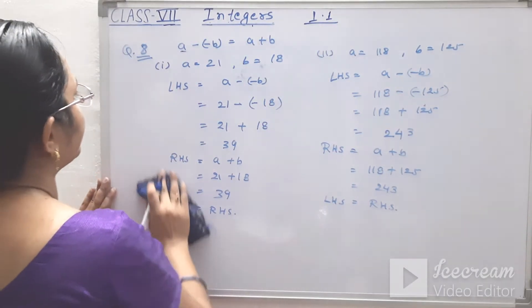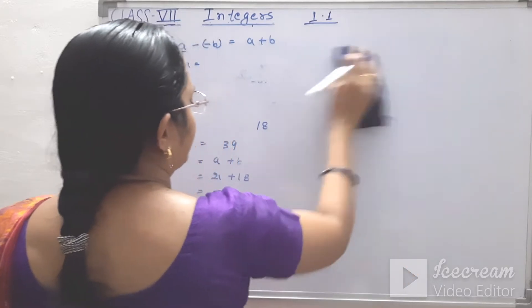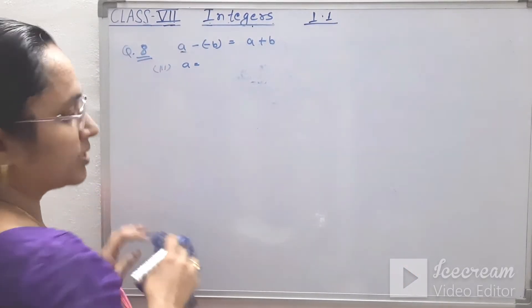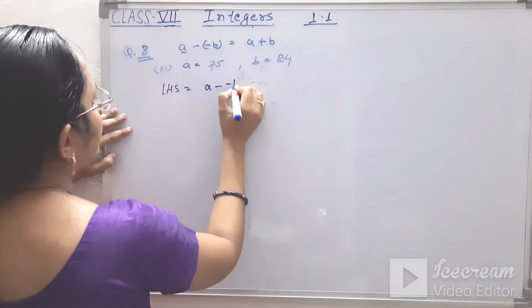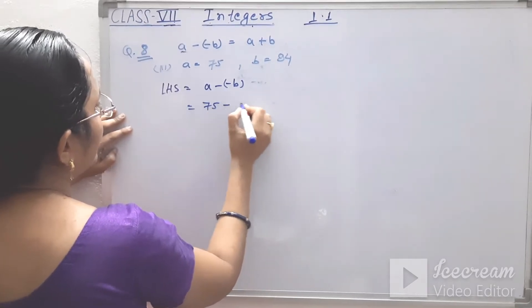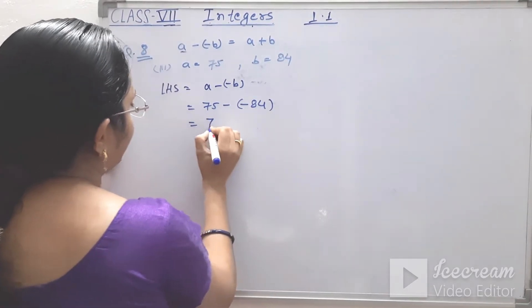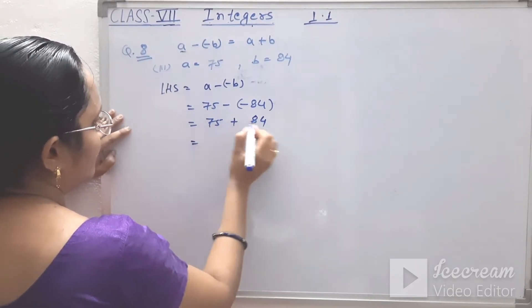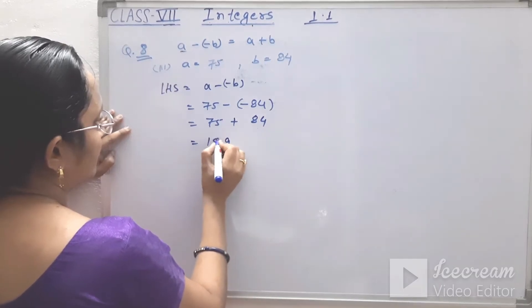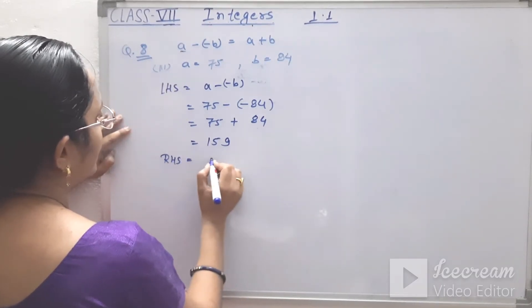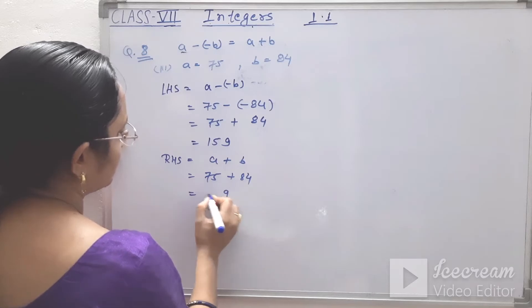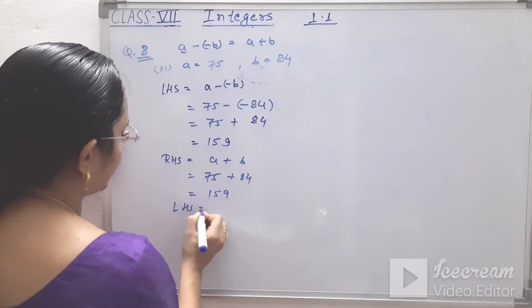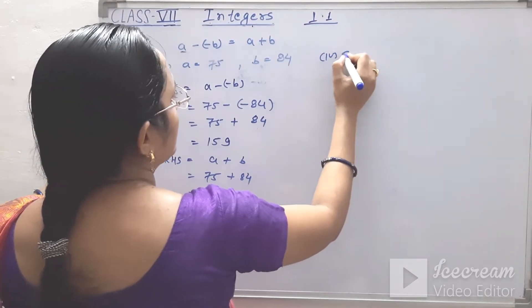Third: a equals 75 and b equals 84. Left hand side: a minus minus b equals 75 minus minus 84 equals 75 plus 84 equals 159. Right hand side: a plus b equals 75 plus 84 equals 159. Left hand side equals right hand side.